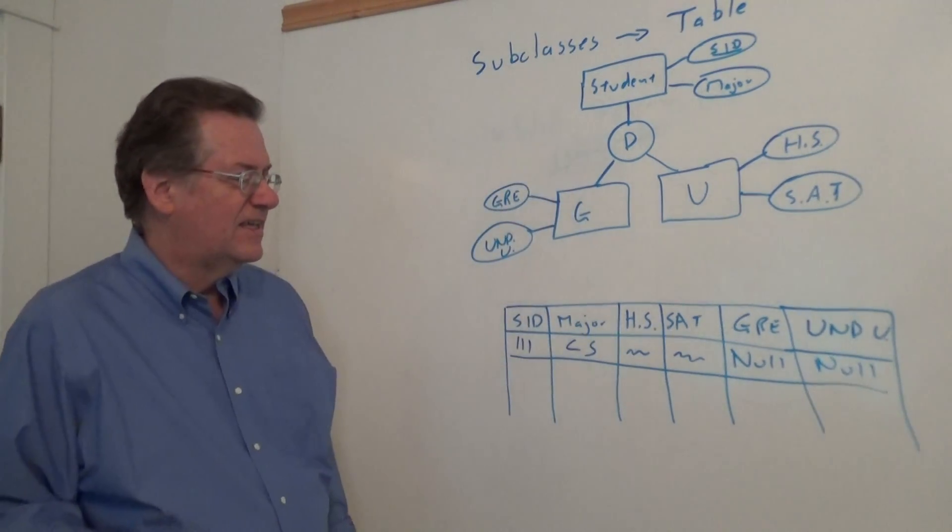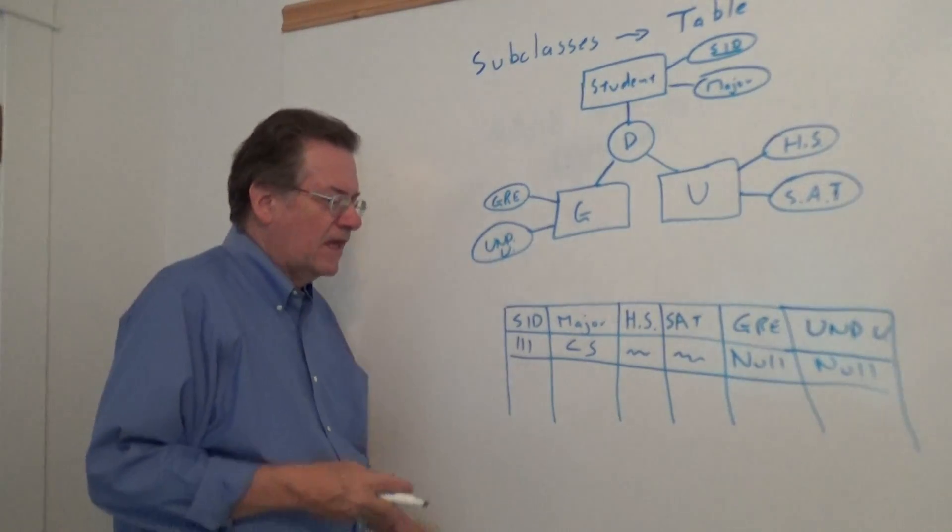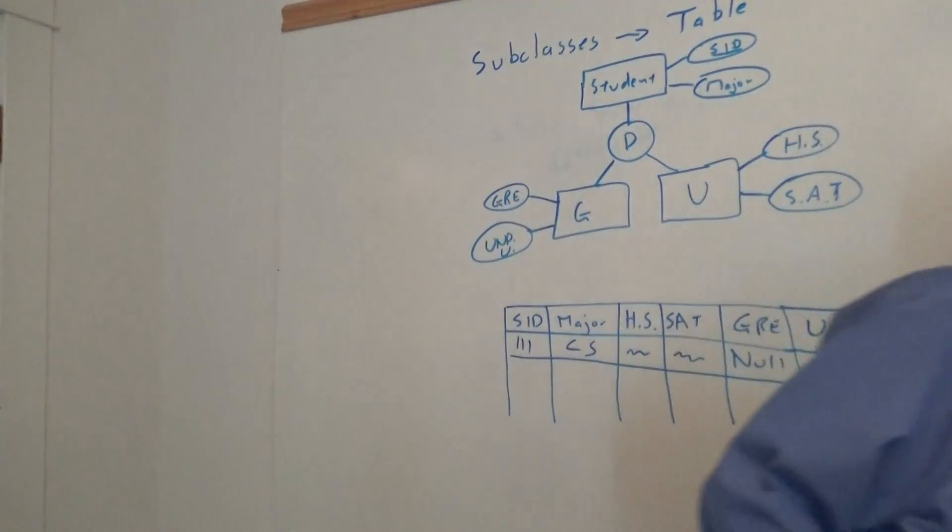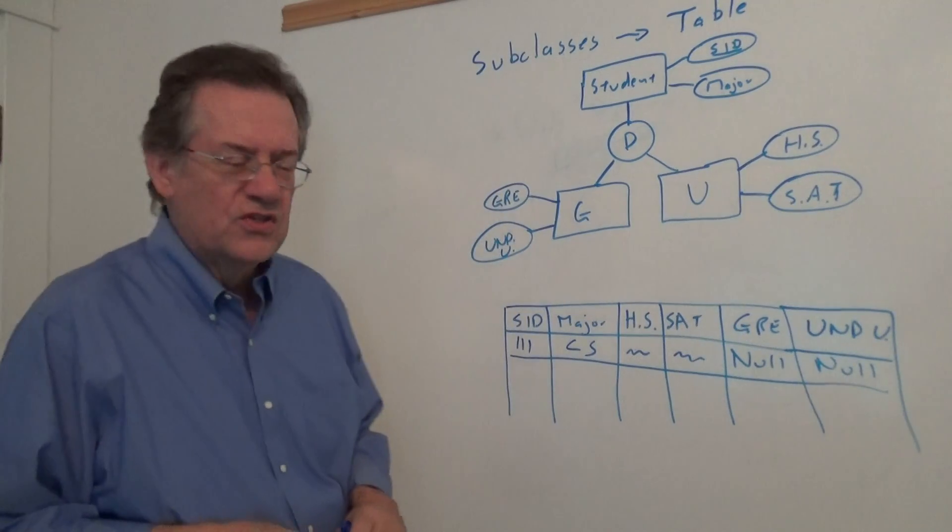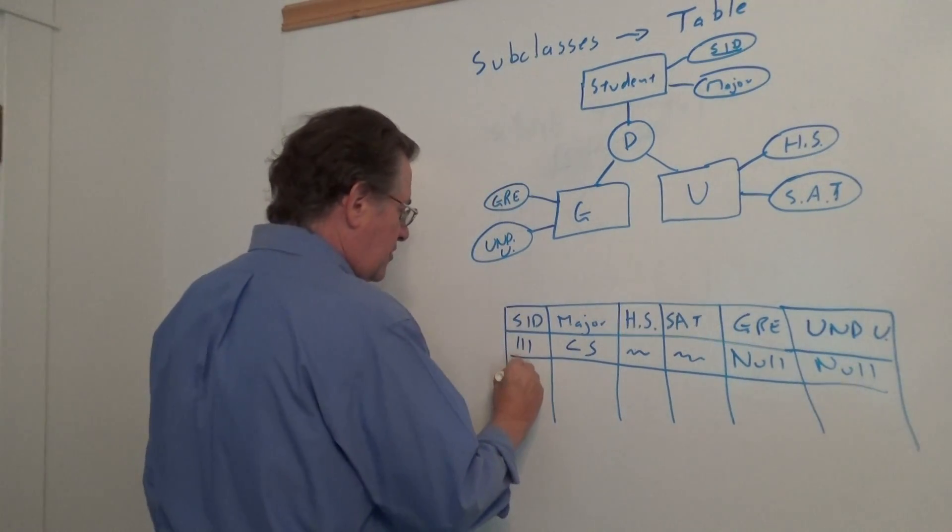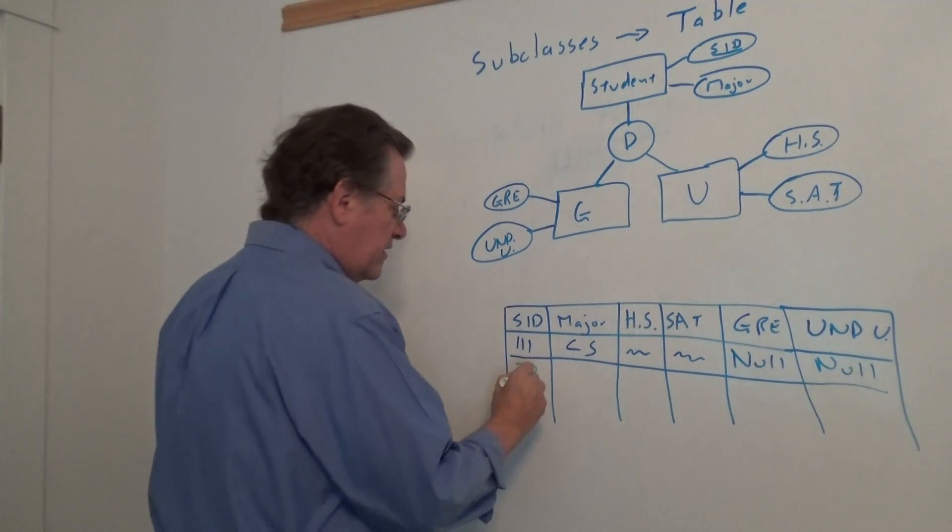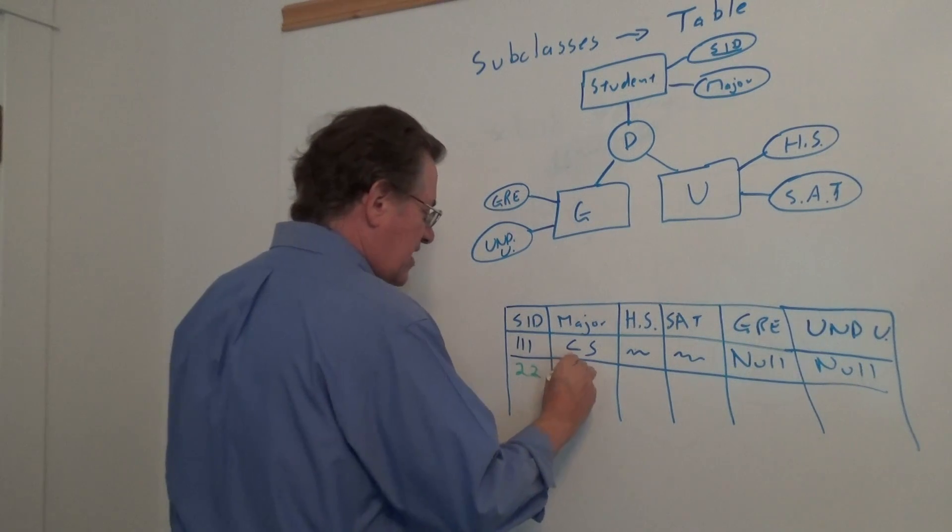Now, let's say the next student, and in this case, the next student will make this student a graduate student. So we might have 222, they have a major, let's say math.